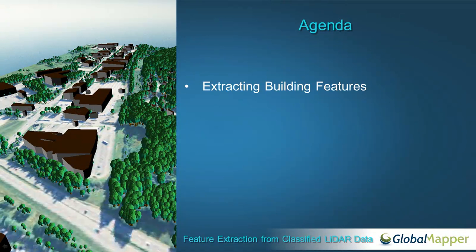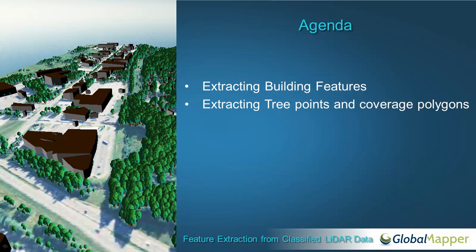Today we're going to take a look at extracting building features from the point cloud. This will create area polygons and we can also represent those in 3D, either extruded to the surface or picking up on the side features of the building. Then we'll look at extracting tree features, which can include tree points at the center point of each tree and coverage polygons representing the spread of each tree.